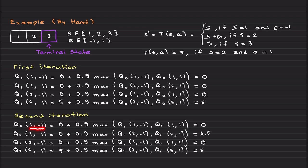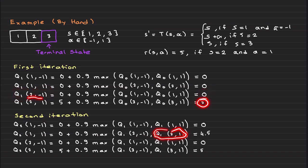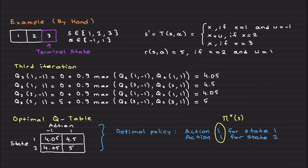Second iteration: state one, action minus one — robot stays at state one, Q values there are still zero, so Q = 0. State one, action plus one — robot goes to state two. Looking at state two's Q values from the previous iteration: Q(2,-1)=0 and Q(2,1)=5. We take the maximum, which is five, multiply by 0.9, giving 4.5. For the remaining states the values are zero and five.